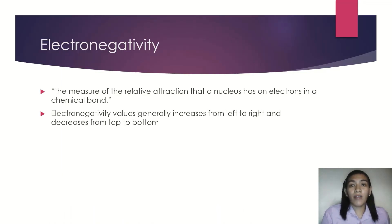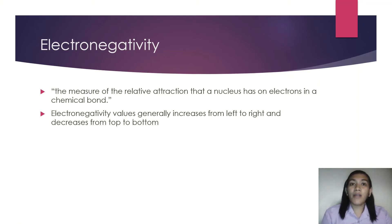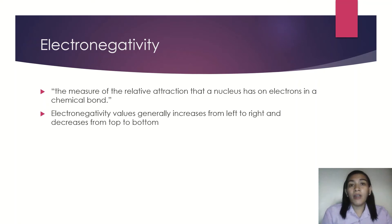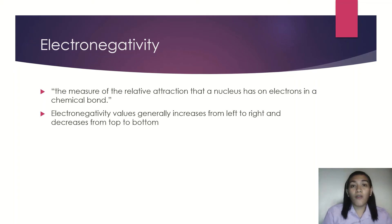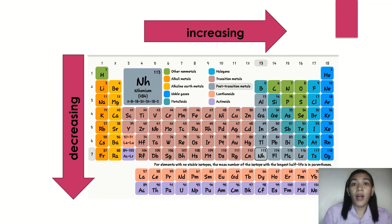Next, we have electronegativity, which is directly related to ionization energy. Electronegativity is the measure of the relative attraction that a nucleus has on electrons in a chemical bond. Electronegativity values generally increase from left to right and decrease from top to bottom — the same trend as ionization energy.